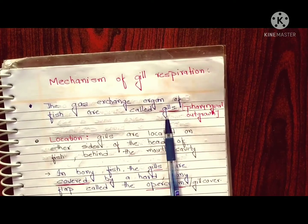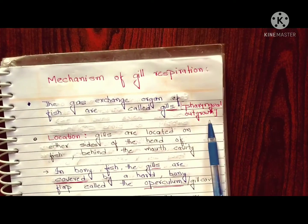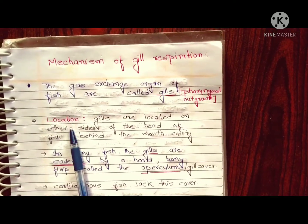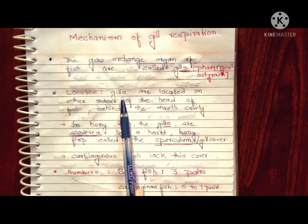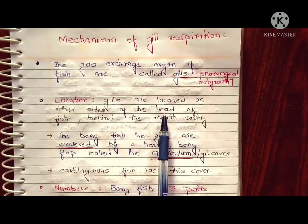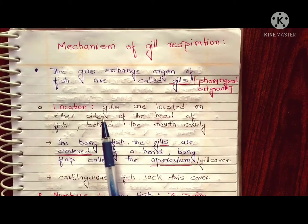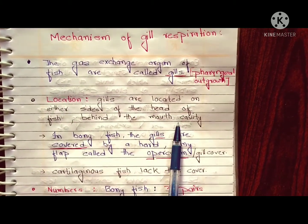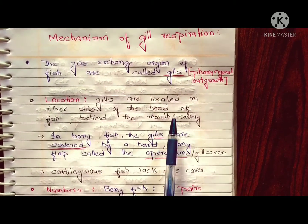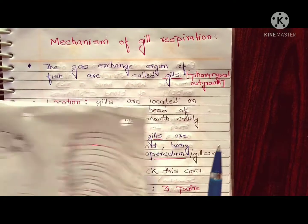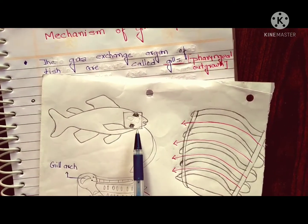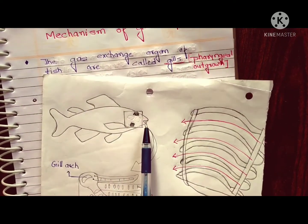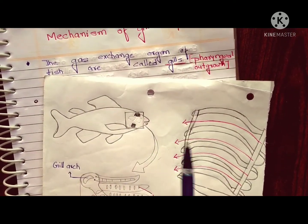These gills are a pharyngeal outgrowth. The gills are present on either side, just behind the mouth cavity, on the head of the fish.